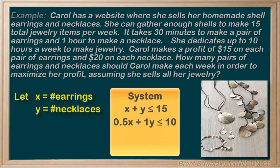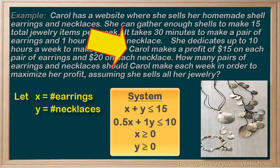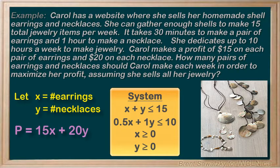Our last couple of inequalities are fairly obvious: x, the number of earrings made, has to be greater than or equal to 0 — she can make zero earrings but not a negative number. Similarly, y, the number of necklaces, has to be greater than or equal to 0. That's our full system of inequalities. Carol's profit is described as $15 per pair of earrings and $20 per necklace, giving us the profit equation p = 15x + 20y. We can't graph this with the extra variable p, so we'll save it to analyze results later.